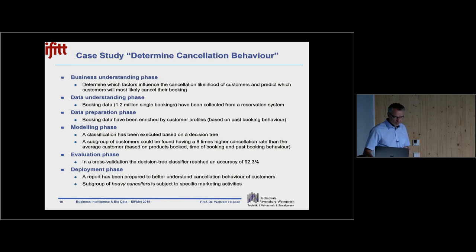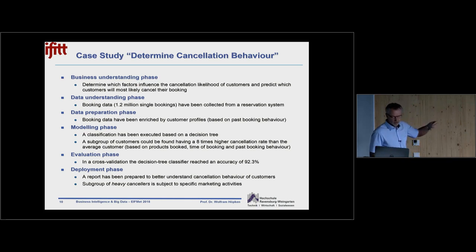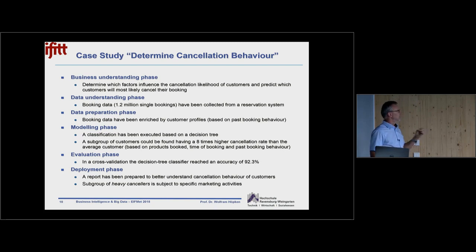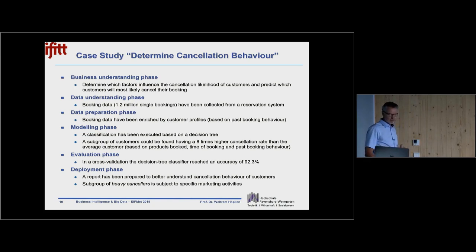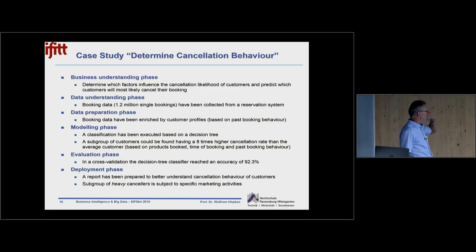This follows the CRISP process already explained by Matthias. Here is an example of what we did in Sweden — the cancellation behavior project. Business understanding means doing requirement definition: we wanted to find out which factors influence the cancellation likelihood of customers and whether we can predict whether somebody will cancel a booking. For data understanding, we collected booking data from SkiStar — the famous skiing company — collecting 1.2 million single bookings. In the data preparation phase, these things have to be prepared, enriched with specific customer characteristics or past booking behavior.